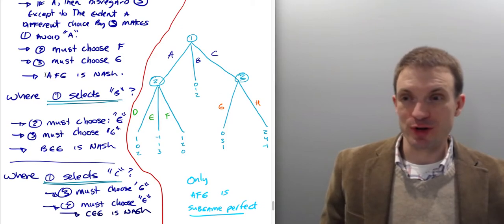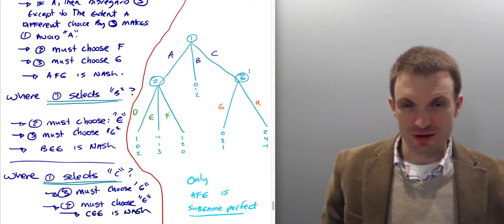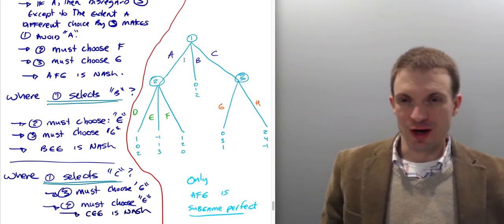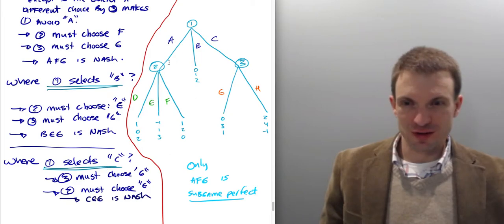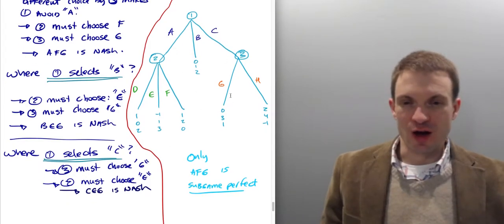Okay, so we have three Nash Equilibrium, AFG, BEG, and then CEG.